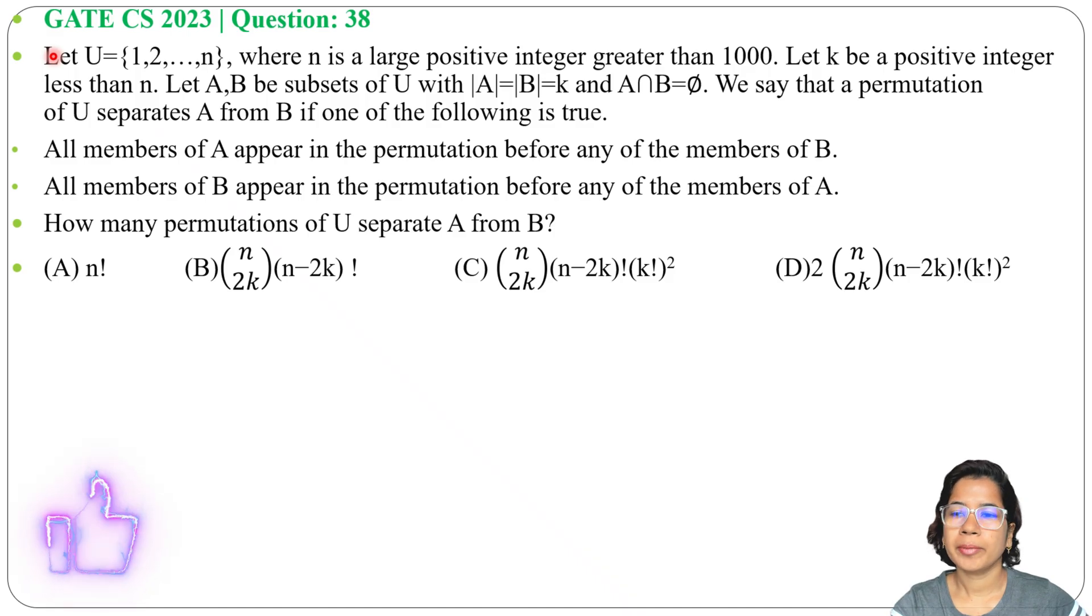Let's solve a previous question of Combinatorics. This question was asked in GATE CS 2023, Question number 38. Let U equals 1, 2 till n where n is a large positive integer greater than 1000. Let k be a positive integer less than n.